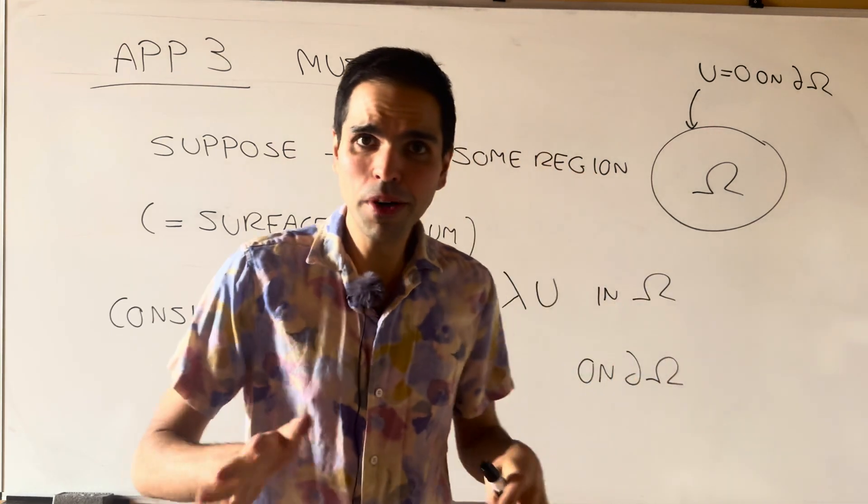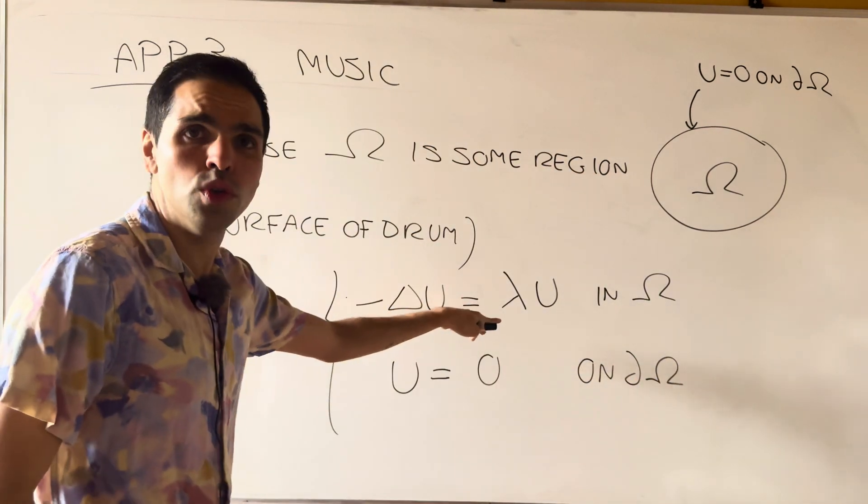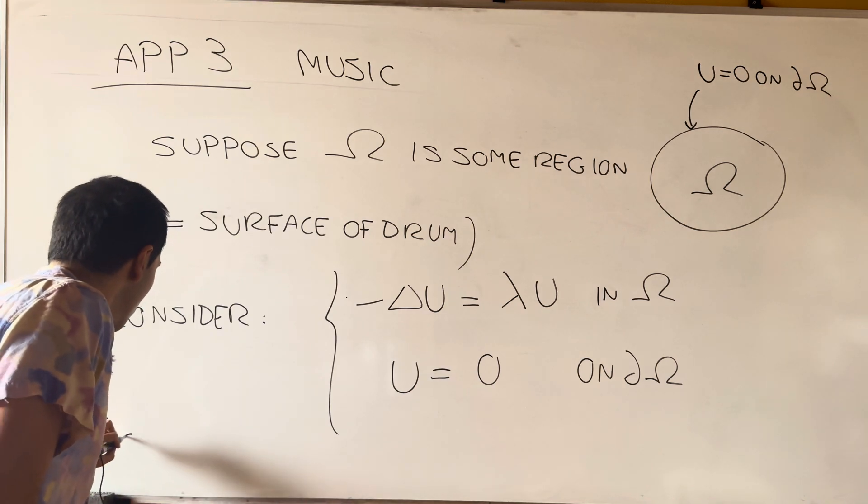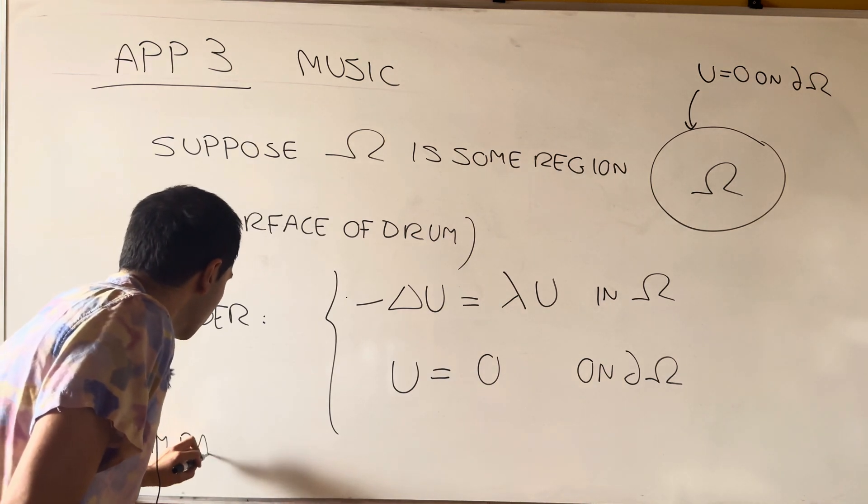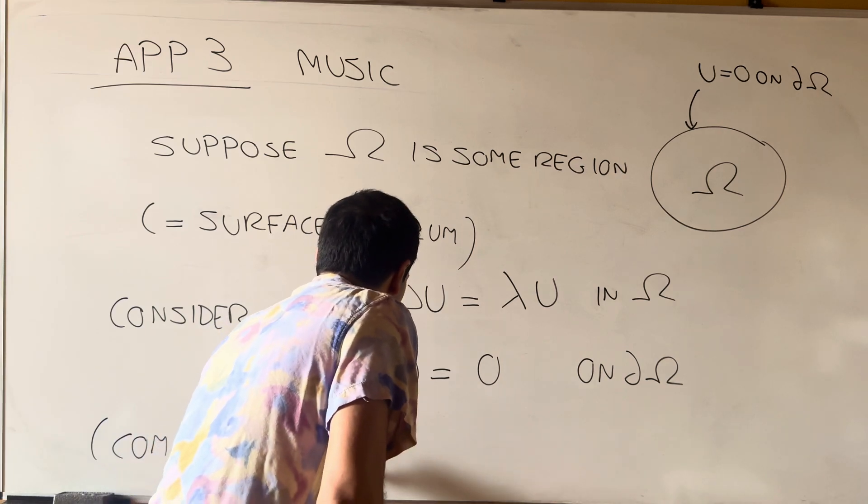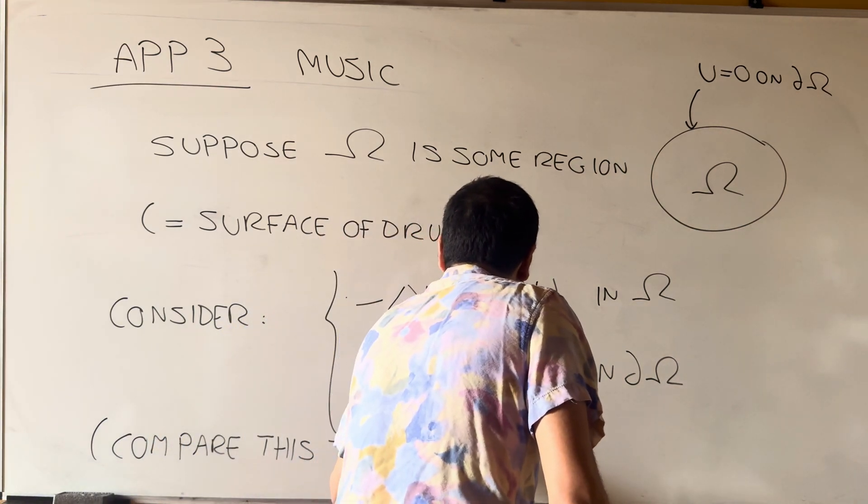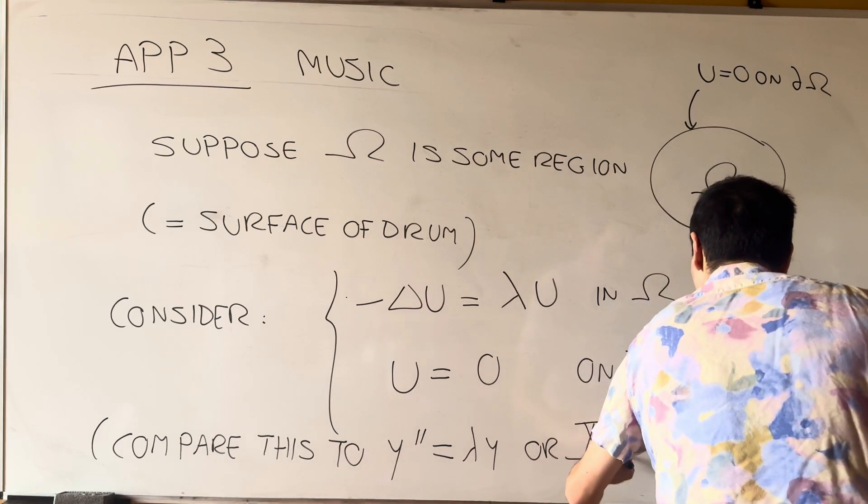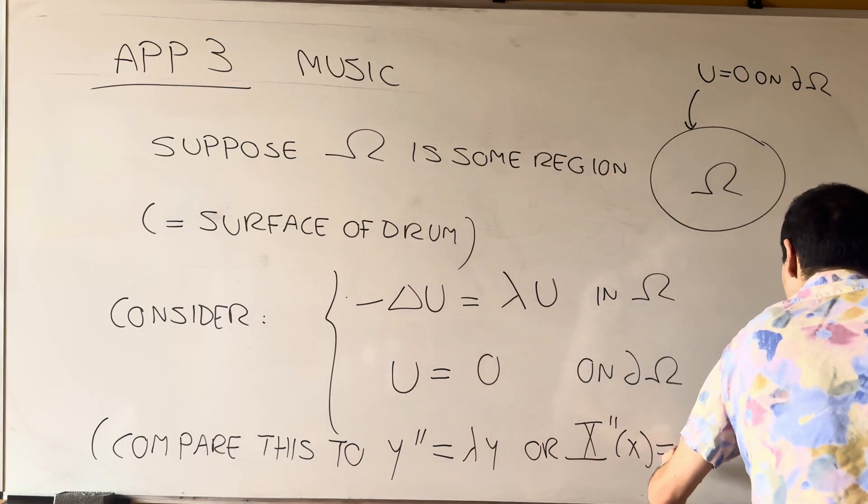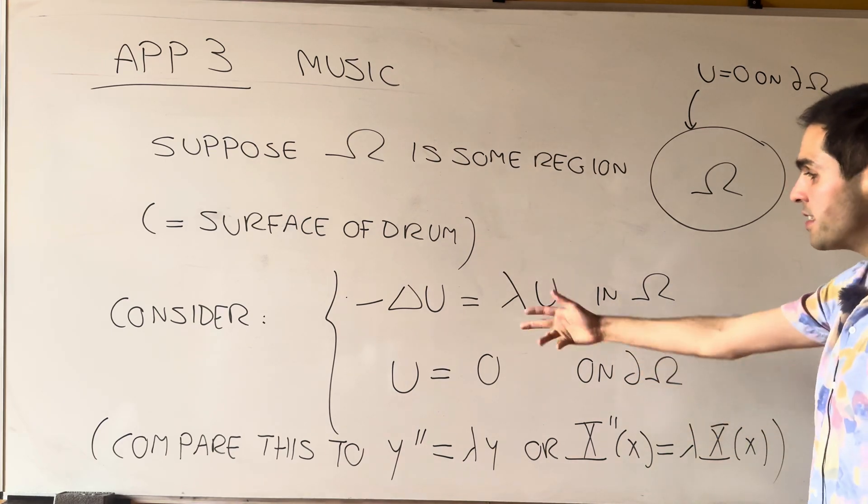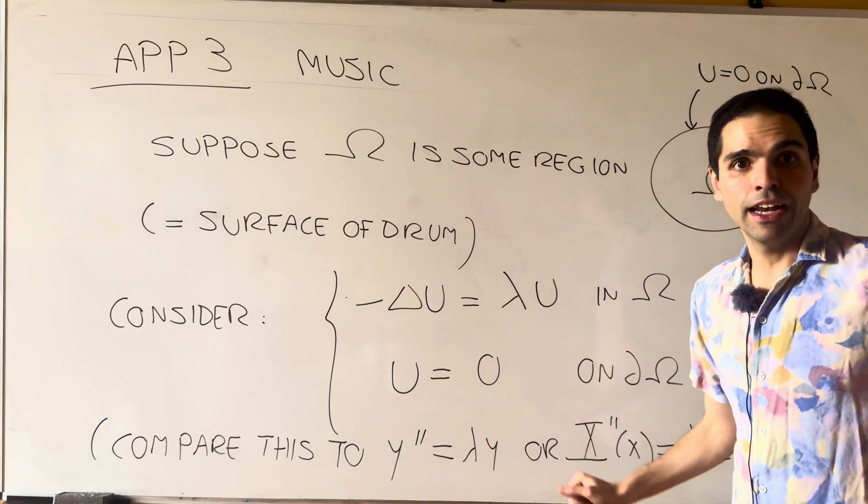And in particular, compare this to the eigenvalue problems that we talked about. So compare this to, let's say, y double prime equals lambda y, or I think I used x as well. So x double prime equals lambda x. So it's the same problem, but with a minus.